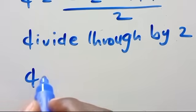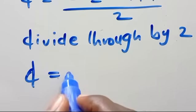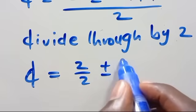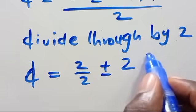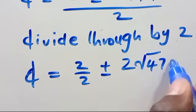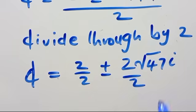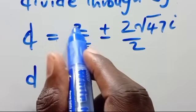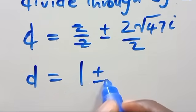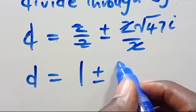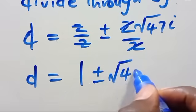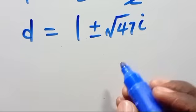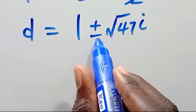Dividing 2 by 2, we get d equals 1 plus or minus square root of 47 times i, over 2. Wait — simplifying: d equals 1 plus or minus square root of 47 i over 2.